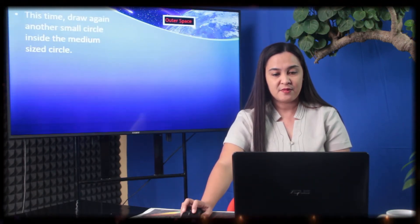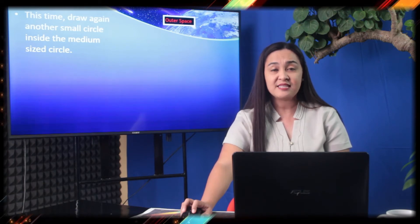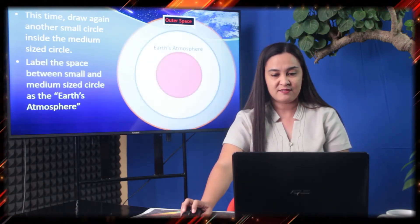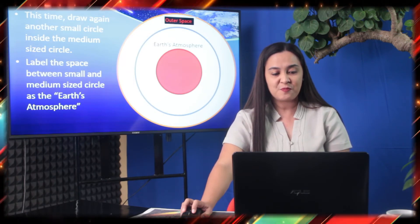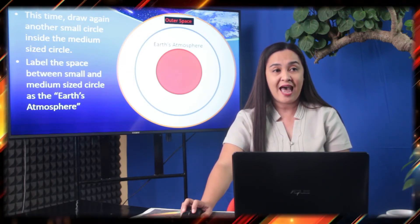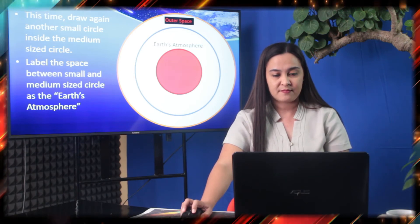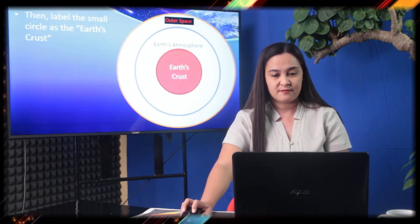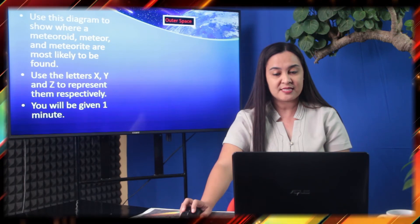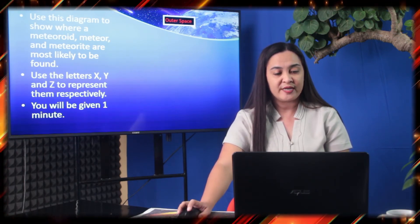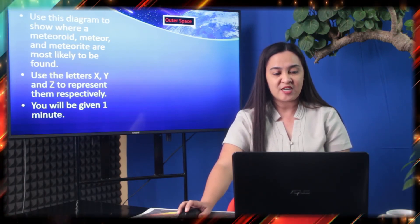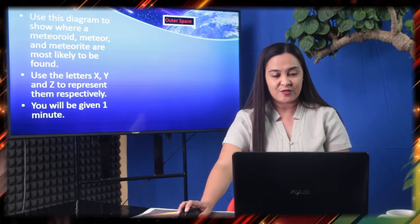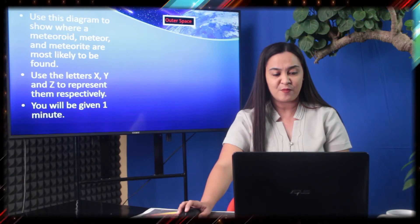Draw another small circle inside the medium-sized circle, and label the small circle as the Earth's crust. Now, we will use this diagram to show where a meteoroid, meteor, and meteorite are most likely to be found. Use the letters X, Y, and Z to represent them respectively.